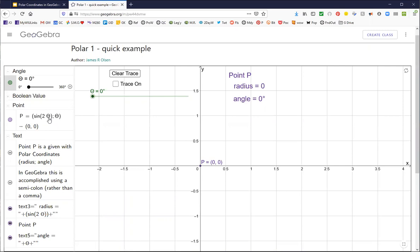To achieve polar coordinates in GeoGebra, we use the semicolon. If you use a comma, it'll be x, y. If you use a semicolon, it's going to be r theta, radius and angle.